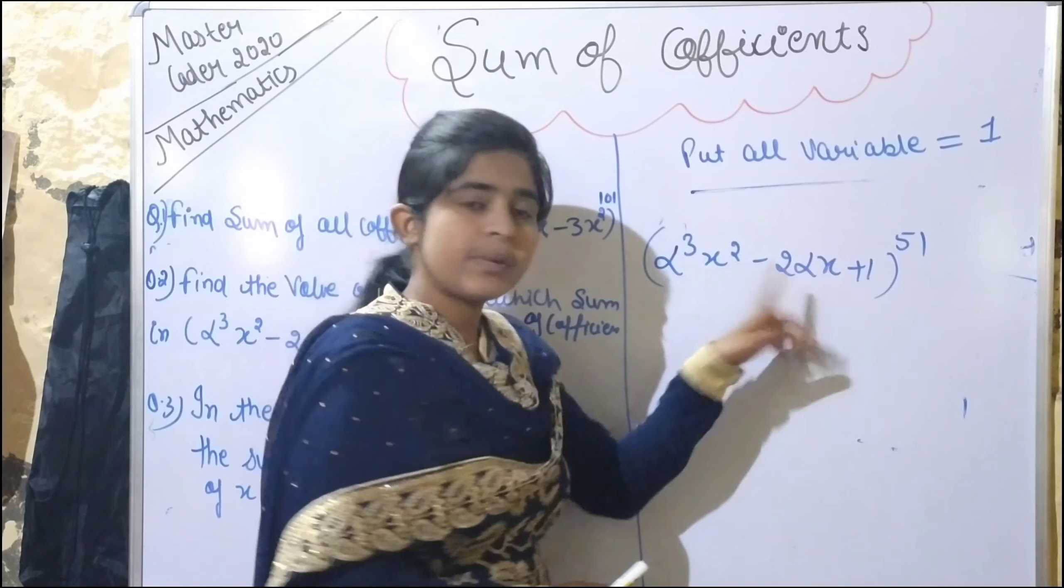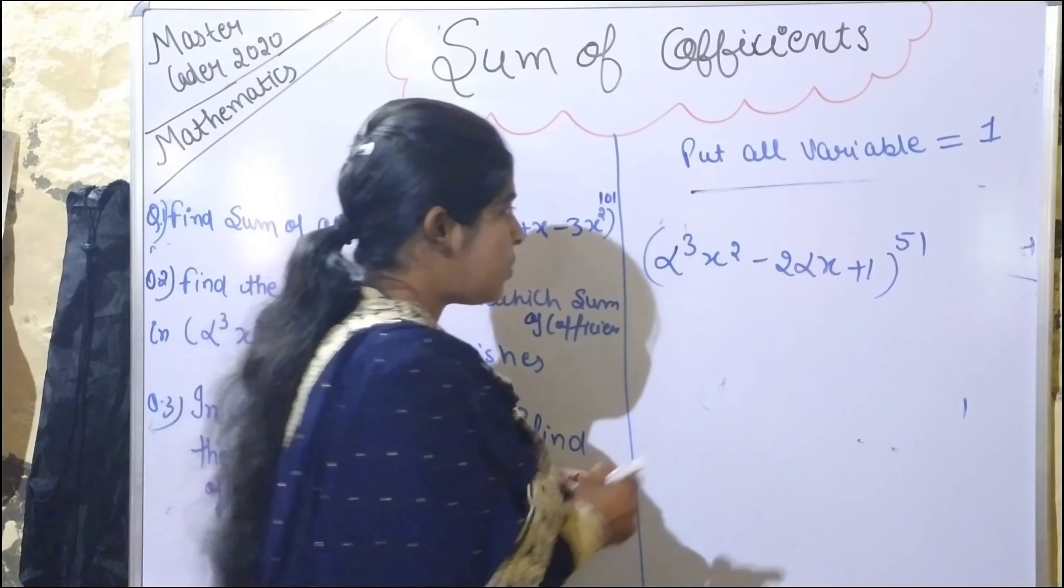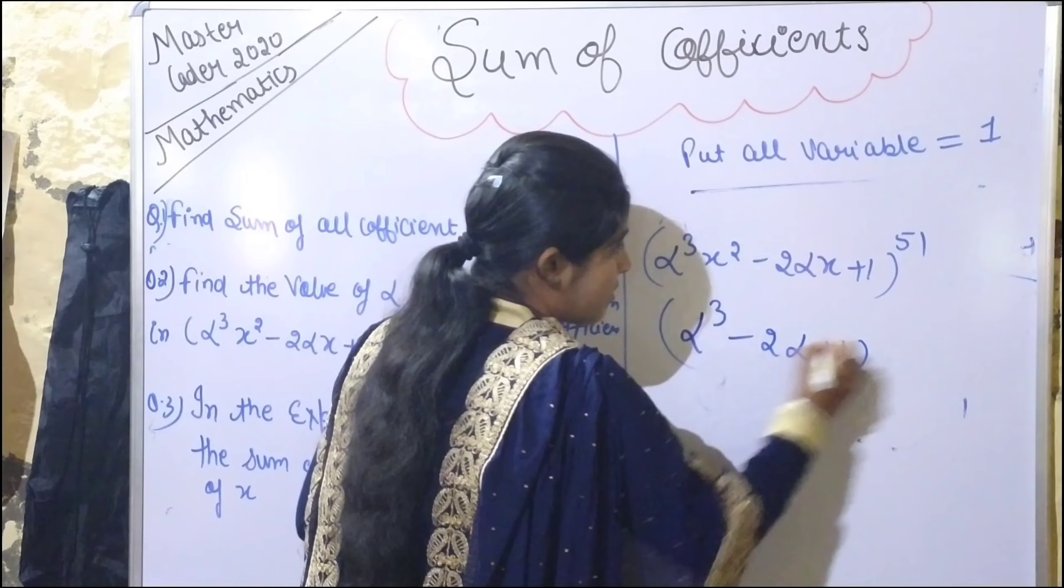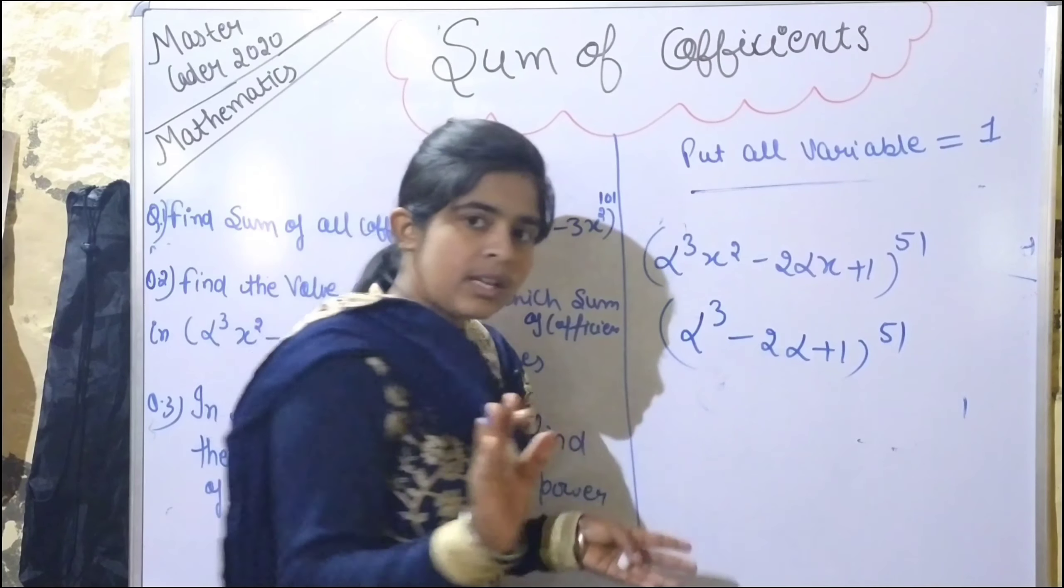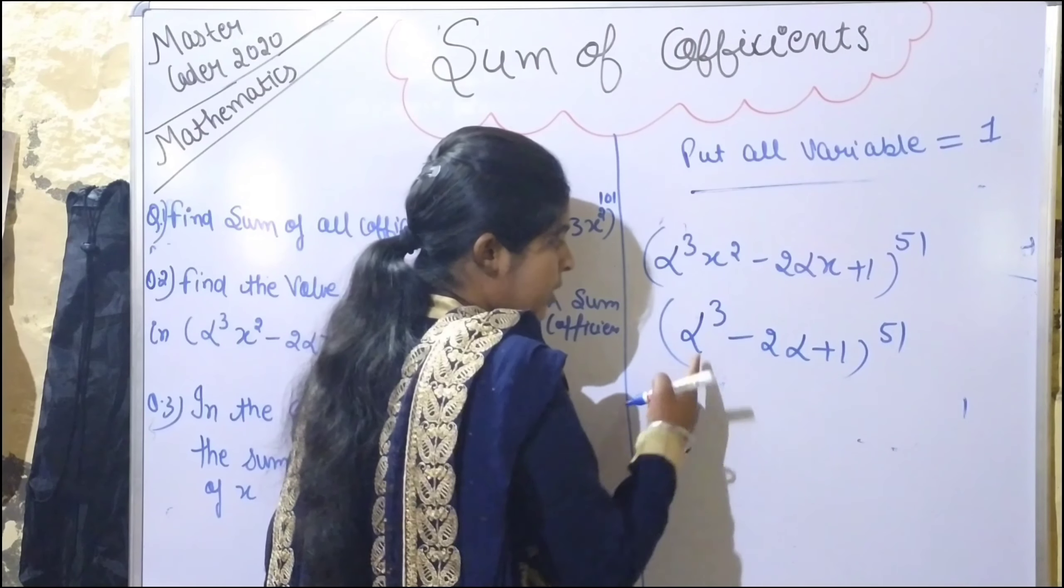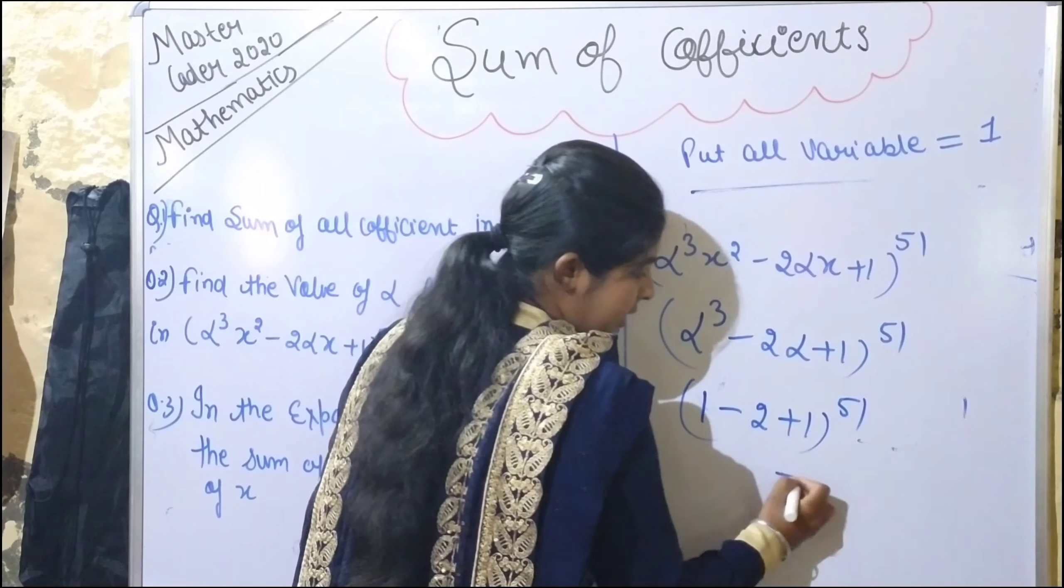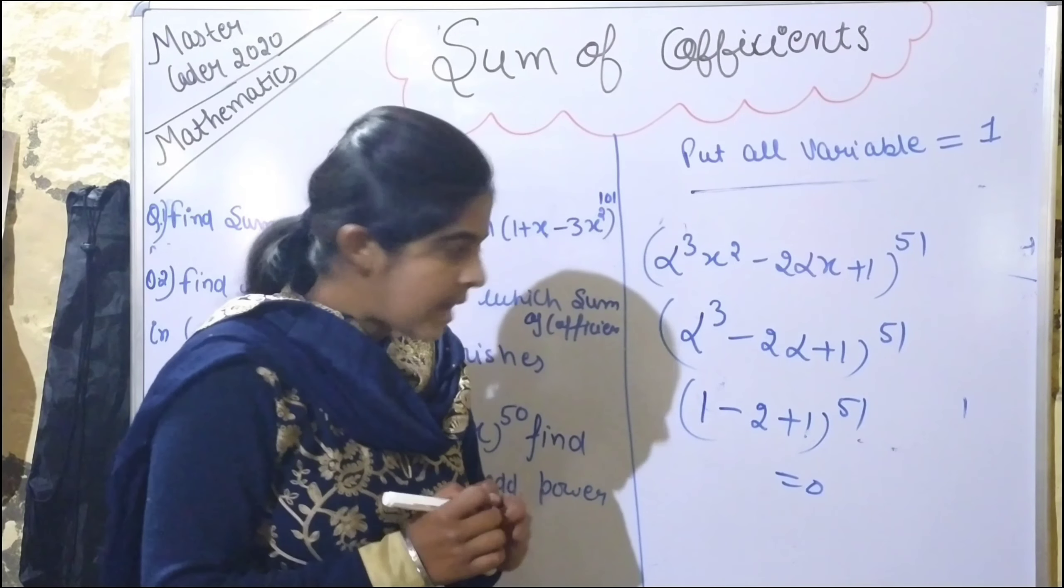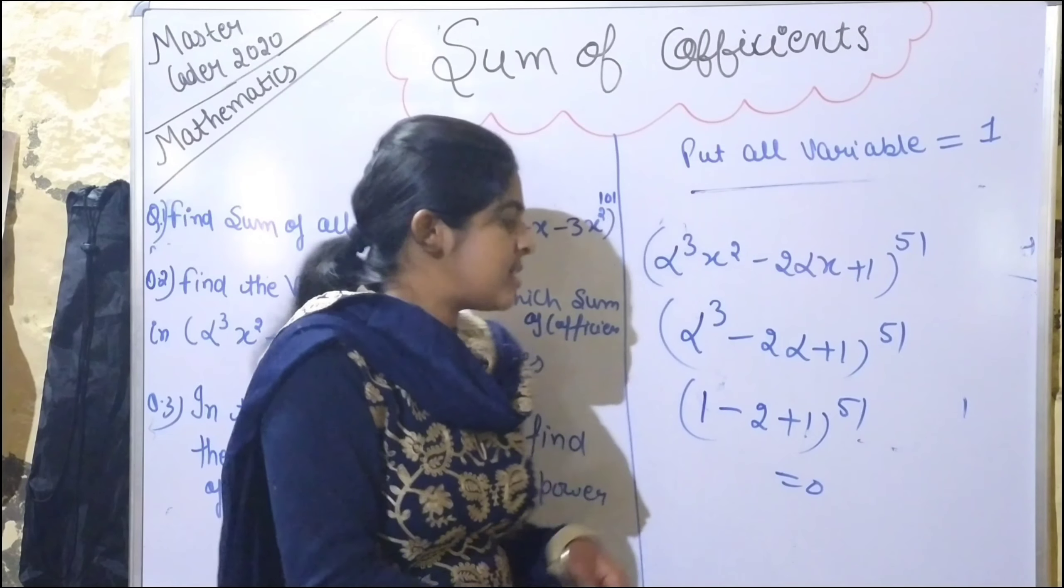If I put zero, it won't help. So I put x = 1, giving (alpha(1)² - 2alpha(1) + 1)^51 = (alpha - 2alpha + 1)^51. But this sum should equal zero. So what value of alpha makes this zero? Let's try alpha = 1: (1 - 2(1) + 1)^51 = (1 - 2 + 1)^51 = 0^51 = 0. So if I put alpha = 1, my answer is zero.